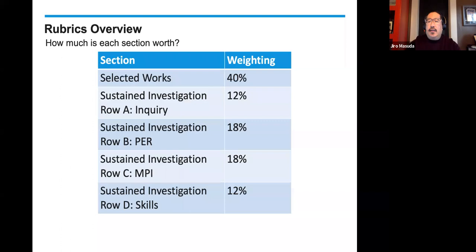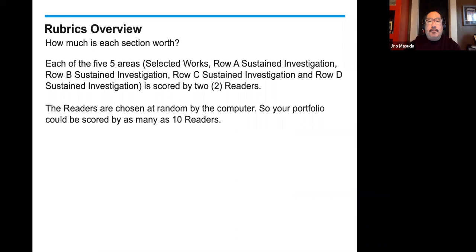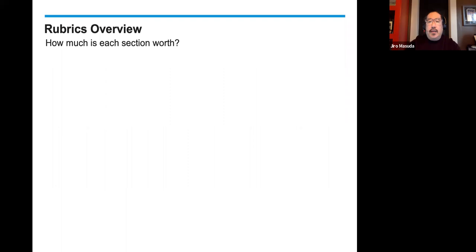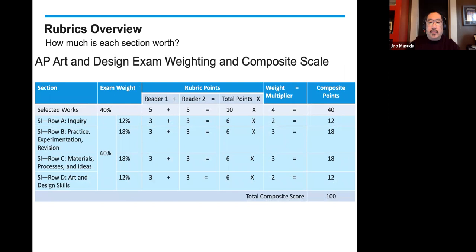Row A is 12%. Row B is 18%. Row C is 18%. And Row D is 12%. Each of the five areas is going to be scored by two different readers, chosen at random by the computer — so your portfolio could have as many as 10 readers looking at each of these five areas. Selected works is scored on a scale of one to five. The four rows in sustained investigation are scored on a scale of one to three.